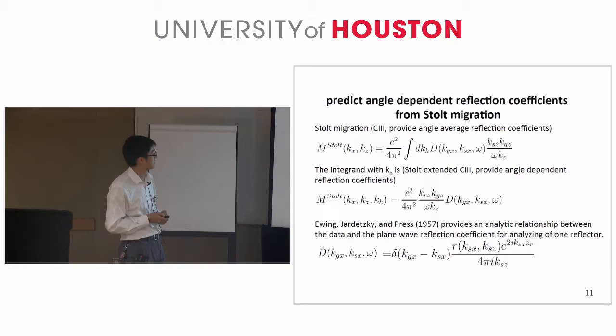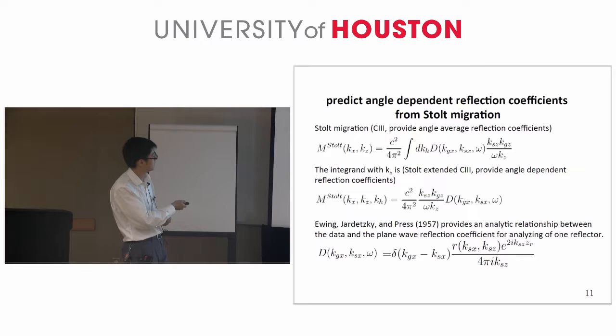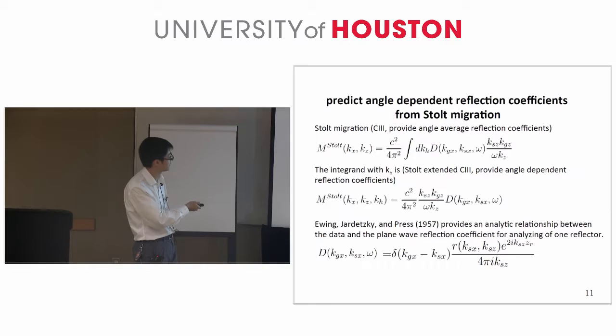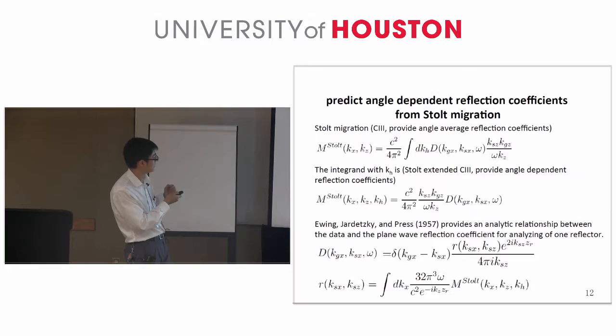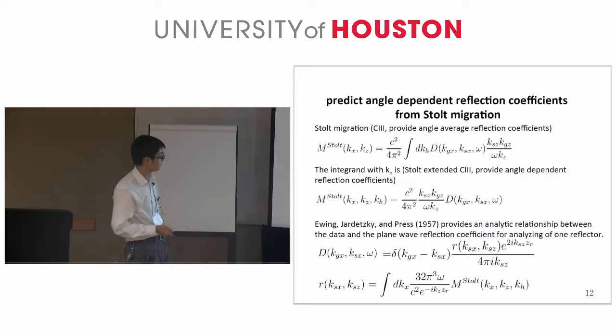For analyzing one reflector, the Yung-Judensky Press provides an analytical relationship between the data and the plane wave reflection coefficient, shown here. We can put this data into the STOE migration and solve for the plane wave reflection coefficient. The equation that predicts the reflection coefficient has R(KSX, KSZ) as the plane wave reflection coefficient, where KSX and KSZ are the horizontal and vertical wave numbers of a plane wave. These two wave numbers determine the angle of the plane wave and therefore determine the angle of the reflection coefficient R.